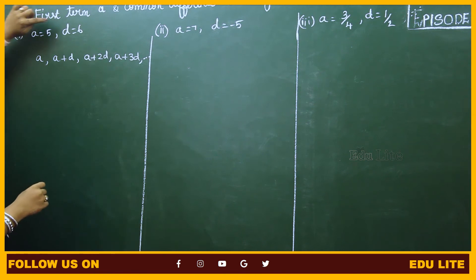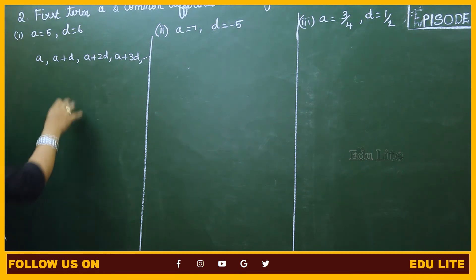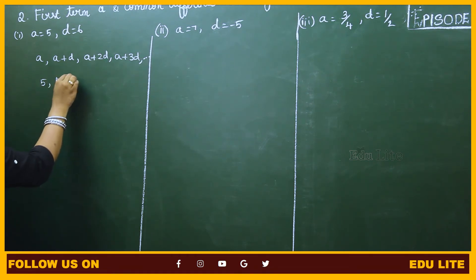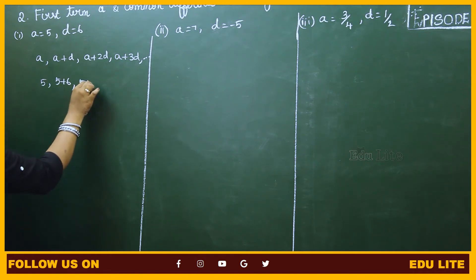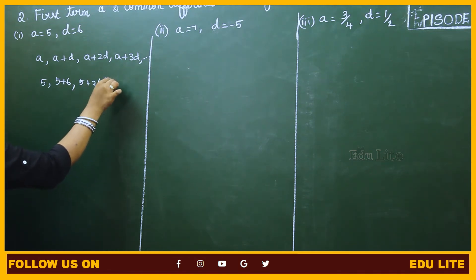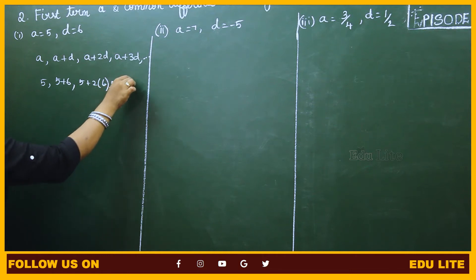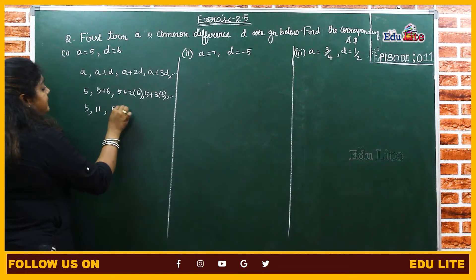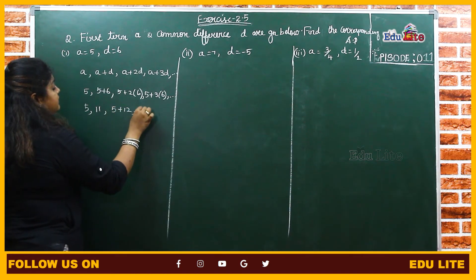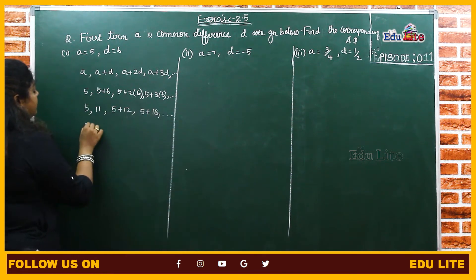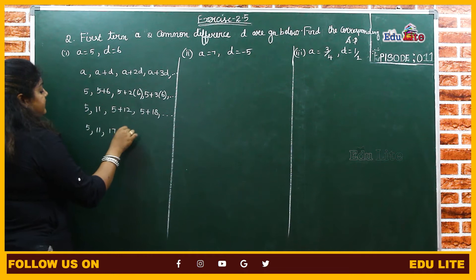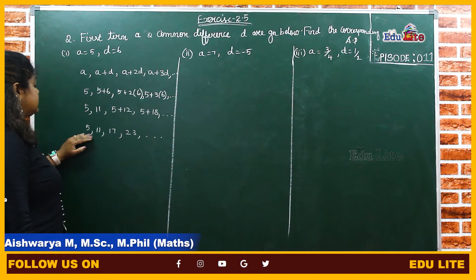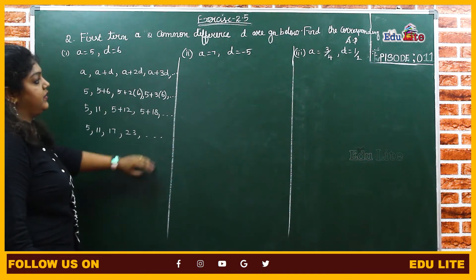For the first subdivision, A value is 5 and D value is 6. Substituting: 5, 5 plus 6 equals 11, 5 plus 2 into 6 equals 17, 5 plus 3 into 6 equals 23, and so on. Therefore, the AP for the given values of A and D is 5, 11, 17, 23, and it continues.